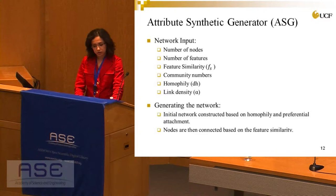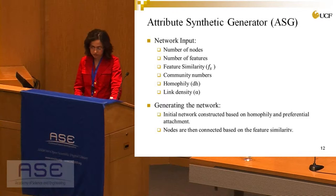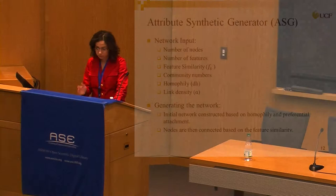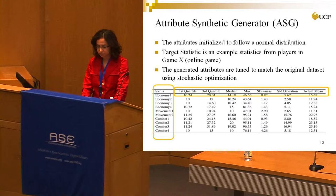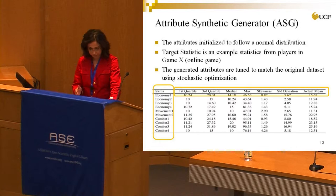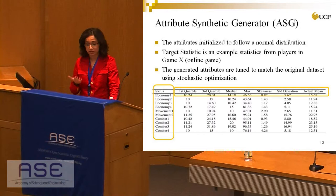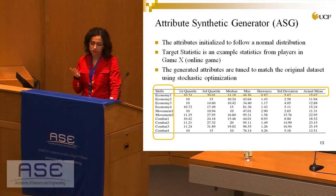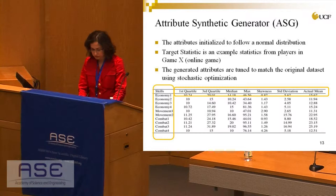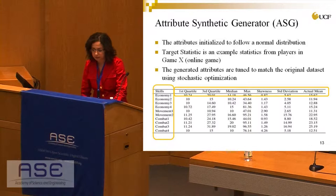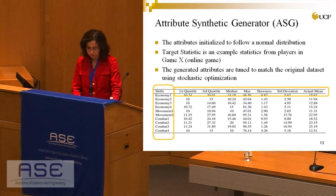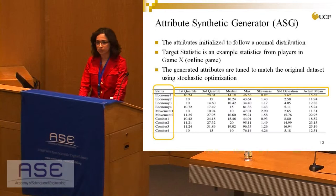The network is generated in two steps. First, the initial network is constructed based on homophily and preferential attachment as in the base generator. Then, nodes are connected based on feature similarities. We first initialize attributes to follow a normal distribution, then use target statistics — taken from an online game called GameX — which include skills representing node attributes, with statistics such as first quartile, third quartile, median, max, skewness, standard deviation, and mean across the whole network. The generated attributes are tuned to match these statistics using stochastic optimization.